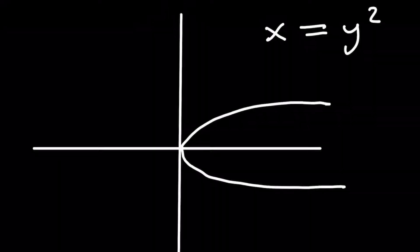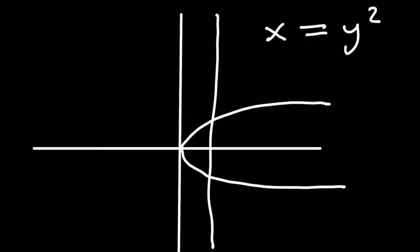Here's another example. In this one, we have x equals y squared. Let's do the vertical line test to determine if this is a function. I draw a line right here and we can see that this goes through two points. The vertical line test tells us if it goes through more than one point — a line parallel to the y-axis — then it's not a function.